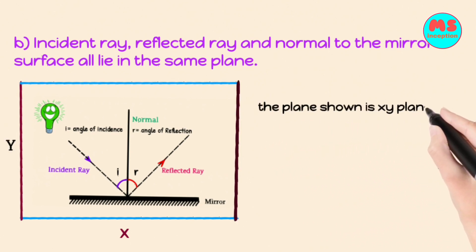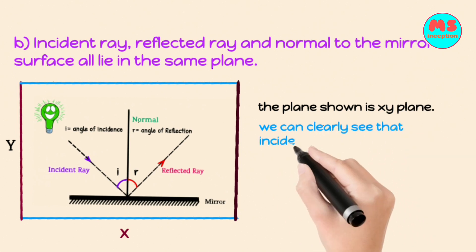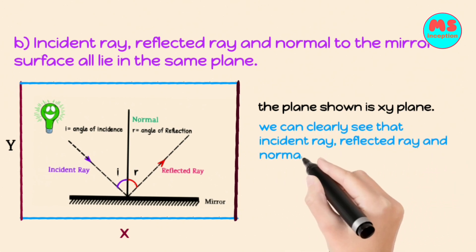The plane shown in the figure is XY plane. We can clearly see that incident ray, reflected ray, and normal all lie in the XY plane.